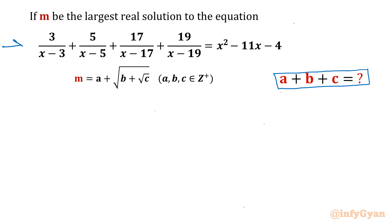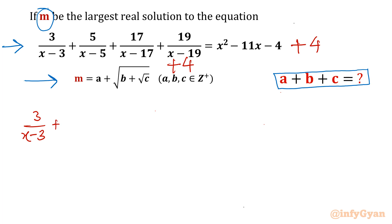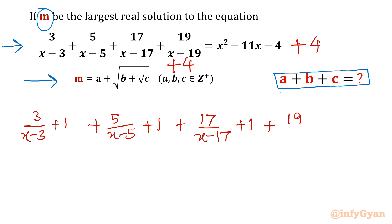We will begin with the given rational equation, solve it first, then find which solution is the largest. We add 4 to both sides, splitting the +4 on the LHS into four ones: 3/(x-3) + 1 + 5/(x-5) + 1 + 17/(x-17) + 1 + 19/(x-19) + 1, and the RHS becomes x² - 11x.